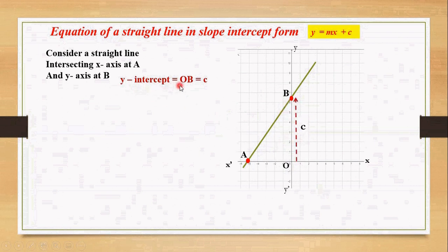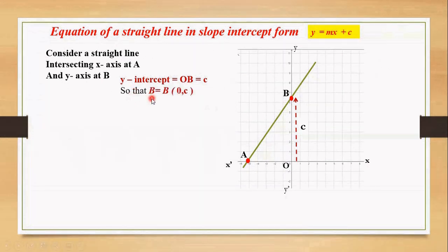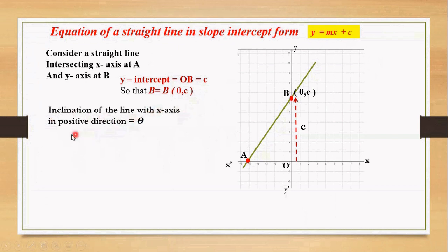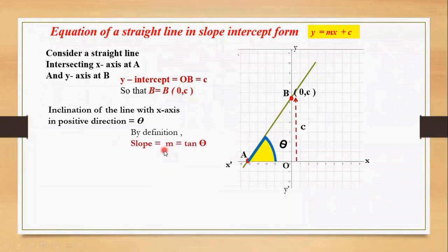So y-intercept OB equals c, so that we get the coordinate of B as (0, c). Let the inclination of the line with the x-axis in the positive direction be theta. We measure the inclination at the intersection of the line and the x-axis in the positive direction. Now by the definition of slope, we have slope m equals to tan theta.